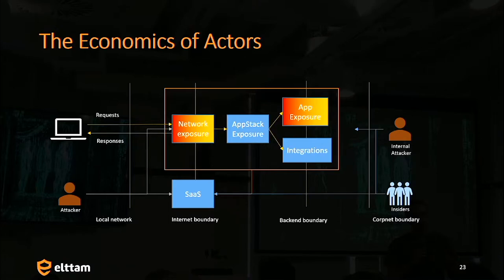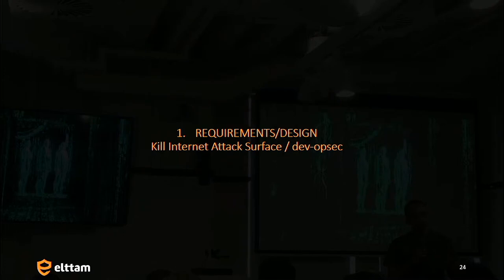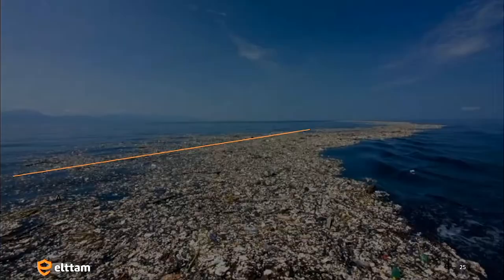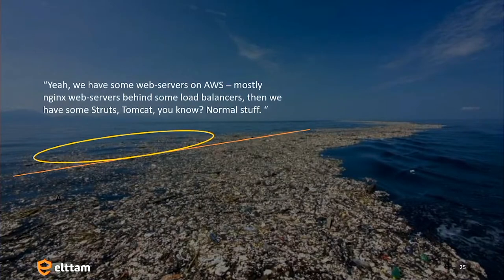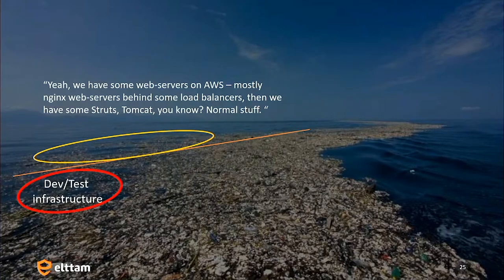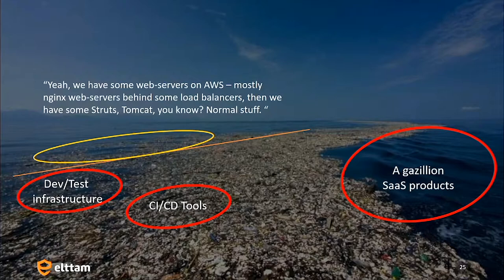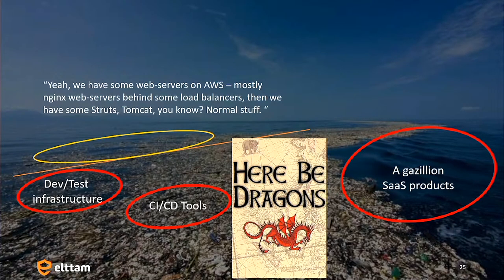Getting started, I want to talk about this thing called DevOpSec — basically getting things off the internet. If someone said what does your internet infrastructure look like, they might come back and say: we use AWS, some NGINX web servers, we're behind load balancers, we use Struts, Tomcat, normal stuff. It's a really small footprint. But in reality when you look at it, they have all their dev and test infrastructure on the internet, just with funny subdomains. They have their CI/CD tools online — maybe Jenkins online — a gazillion SaaS products, and general dragons everywhere. This is the most common thing which I see and which a lot of security professionals see.